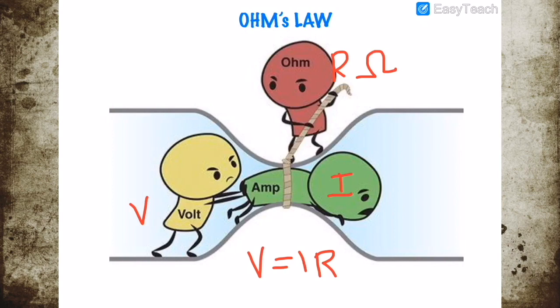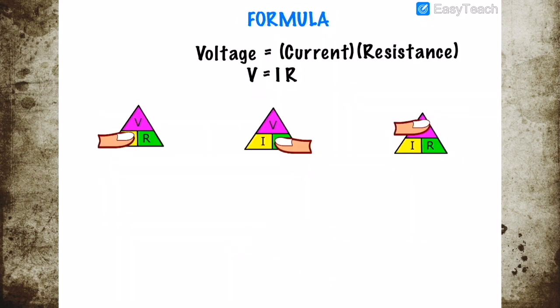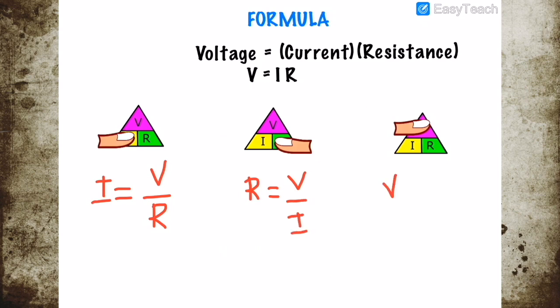The current coming out of the battery depends on the voltage and the resistance of the circuit. The stronger the voltage, the higher our current. The stronger our resistance, the lower our current. For Ohm's Law: voltage equals current times resistance. If looking for current, it is V over R. If looking for resistance, it is V over I.